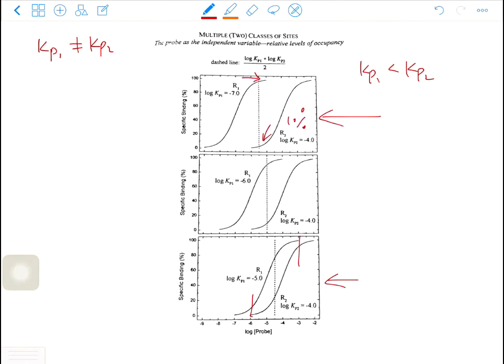So when the probe binds to one receptor, it also binds to a significant amount of the other type of receptor. So there is no selectivity for the receptor. In the top panel, there is a good selectivity for the receptor.